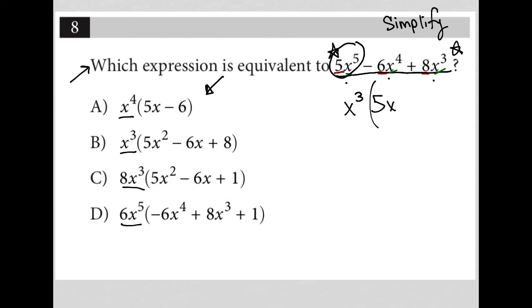Minus, what would I multiply x to the third by to get 6x to the fourth? Well, that would just be 6x. And lastly, what would I multiply x to the third by to get 8x to the third? That would just be positive 8.